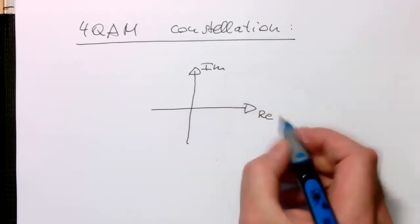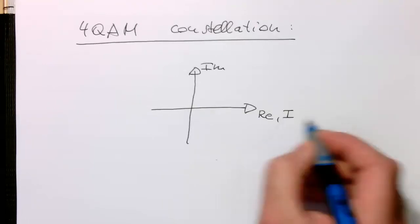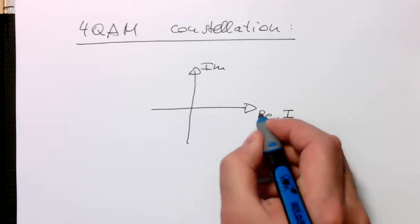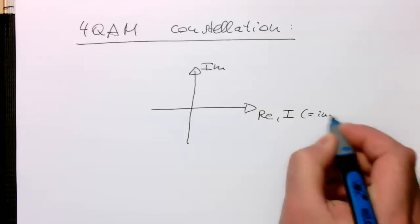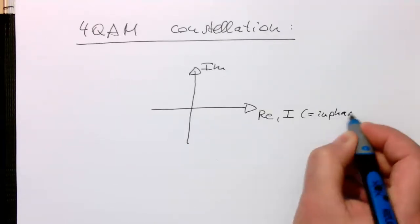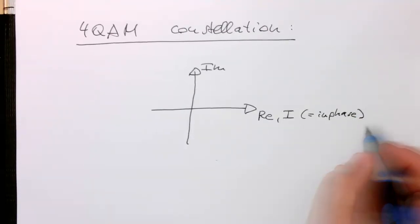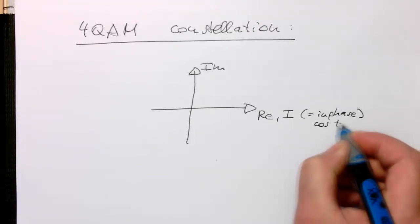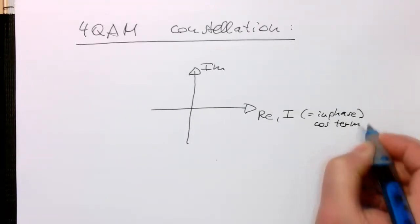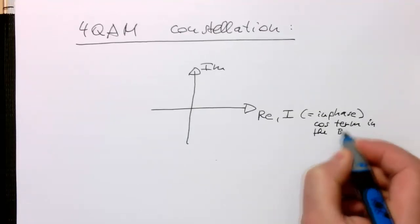Very often this is called also the I component, just to confuse everybody, but this means I for in-phase. That's the one which is turning later into the cosine term, cosine term in the bandpass modulator.